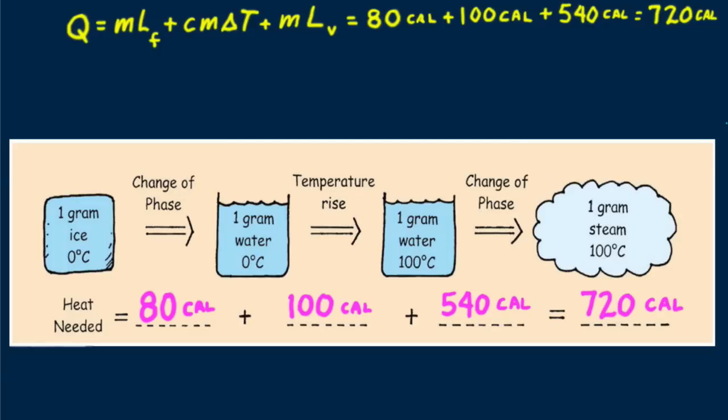So to turn our 1 gram of 0 degree ice to steam at 100 degrees Celsius requires an energy input of 720 calories.